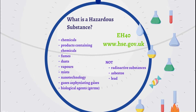One way to help determine if something is considered a hazardous substance is to check the safety data sheet supplied with it. If a data sheet is not supplied, these are easy to obtain from the manufacturer, usually via their website, but you can also call or email the manufacturer to ask to be sent a copy. Another place to check is the EH40 guidance document. This can be found on the HSE website and is free to download. You can search this document for your substance, and if it is listed with a workplace exposure limit, you can assume that this substance should be managed under the COSHH regulations.